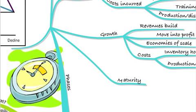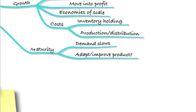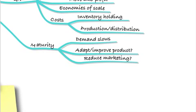We then move into our maturity phase. During this phase, demand will slow for the product — demand can't go on at the same level forever. What we could do to react to that is adapt or improve the product, perhaps bringing out a different version to try and boost sales. We also have to choose whether to reduce our marketing or not. If we reduce our marketing, we run the risk of damaging demand and pushing the product into the decline phase. So the business must choose: reduce marketing and risk decline, or increase marketing to keep the product in maturity where we can still make profit.